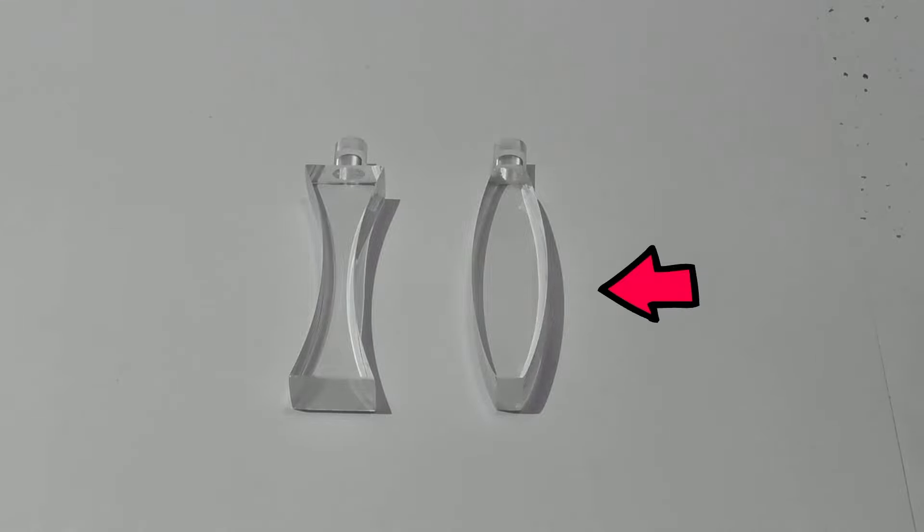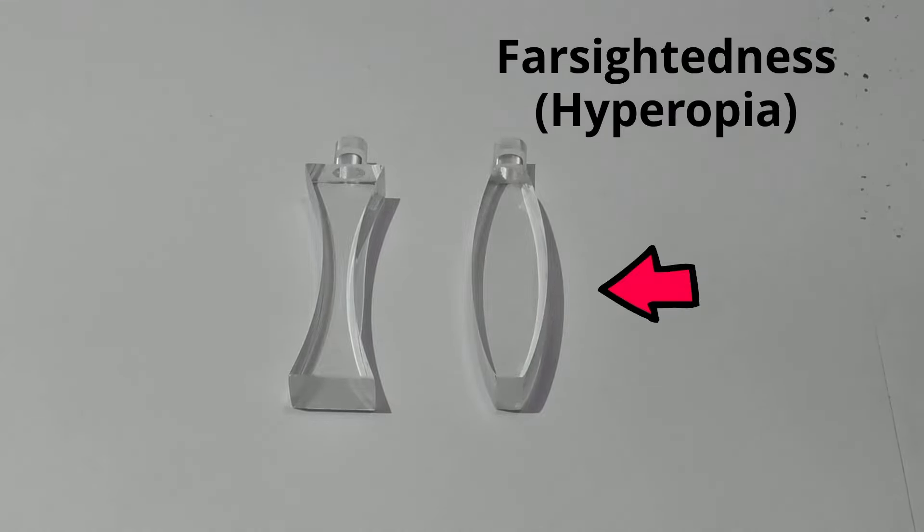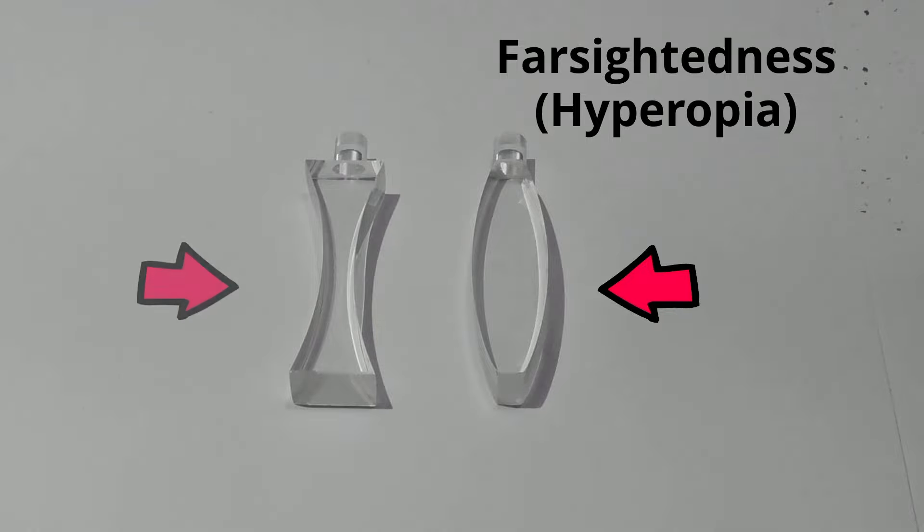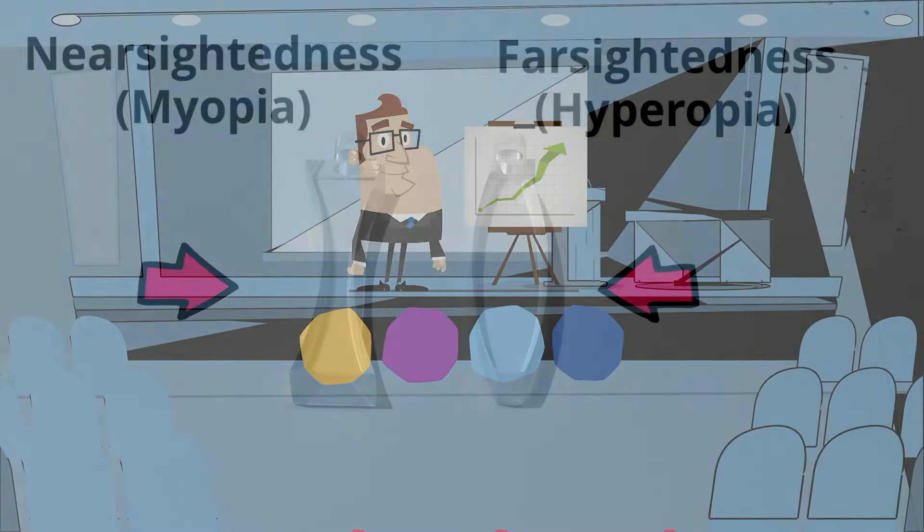So in summary, a convex lens is used to correct farsightedness and a concave lens is used to correct nearsightedness. Thanks for watching.